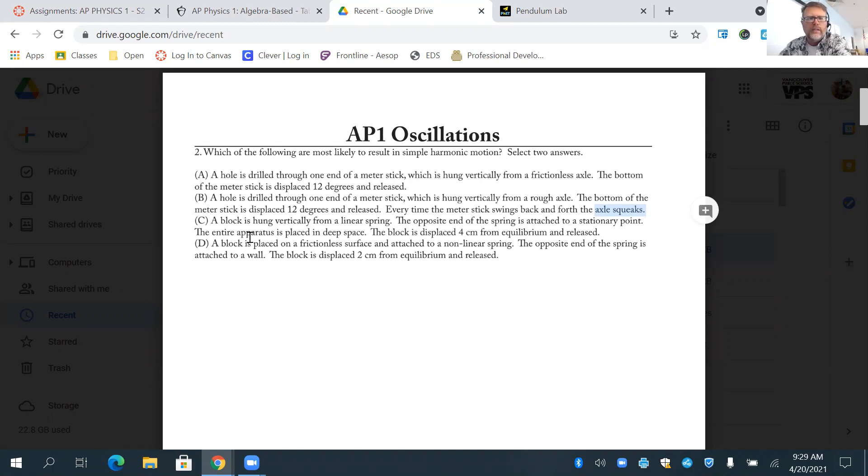C, a block is hung vertically from a linear spring. The opposite end is attached from a stationary point. The entire apparatus is placed in deep space. We don't even have any gravity. The block is displaced four centimeters from equilibrium and released, so no dampening, no gravity. It has this nice, simple harmonic motion. So yes, true.